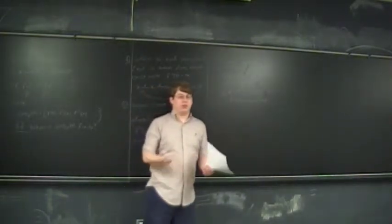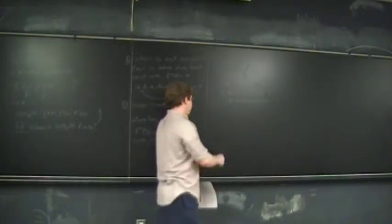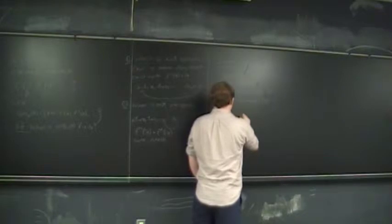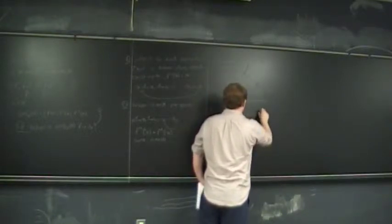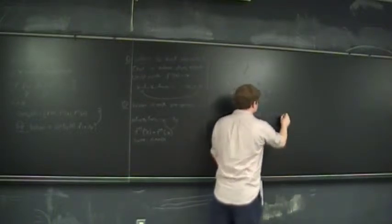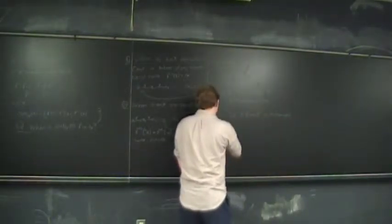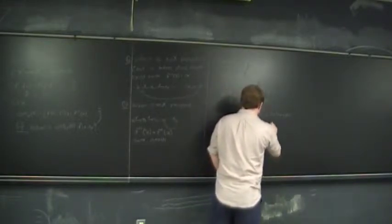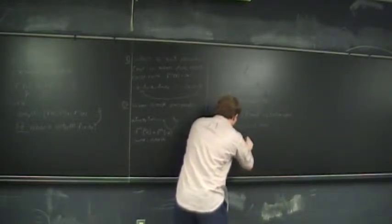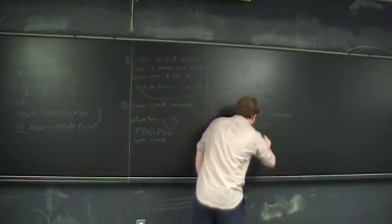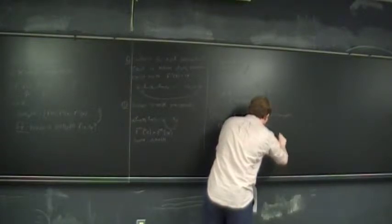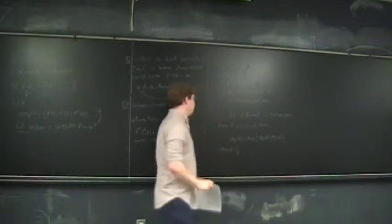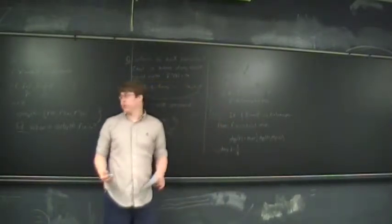One thing to note before moving on: holomorphic maps between the Riemann sphere are actually quite nice. In particular, if f: P¹ → P¹ is holomorphic, then f is actually a rational map. We say the degree of f is the maximum of the degree of p and degree of q, where we write f as p over q. So not only are we looking at holomorphic maps, we're just looking at rational functions — quotients of polynomials.